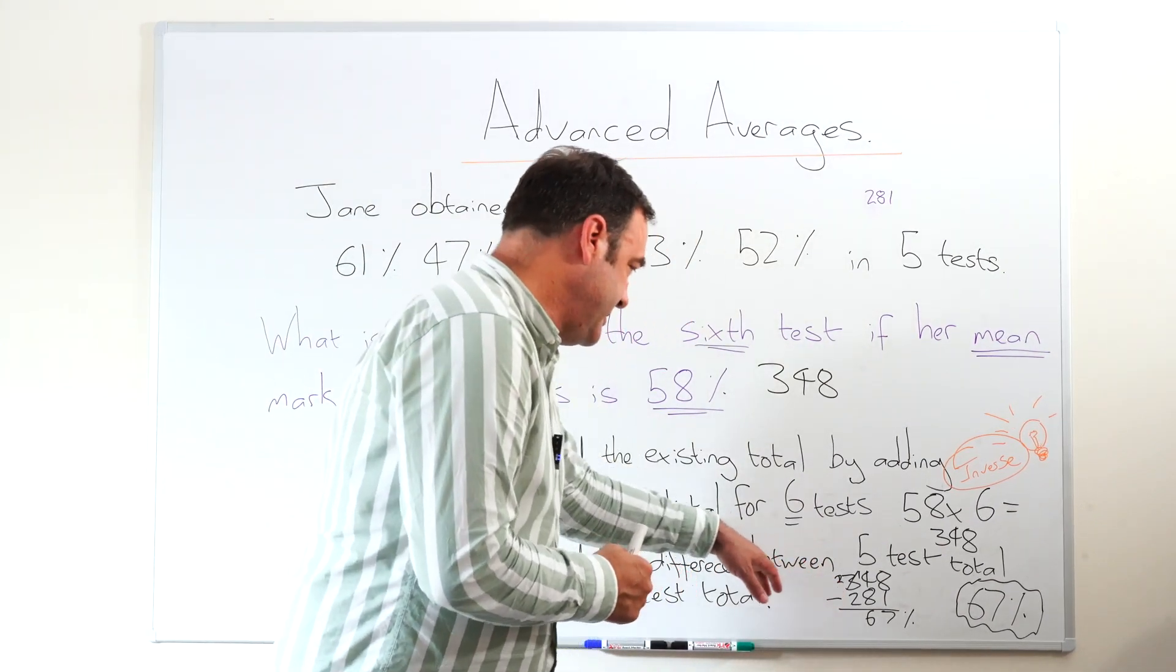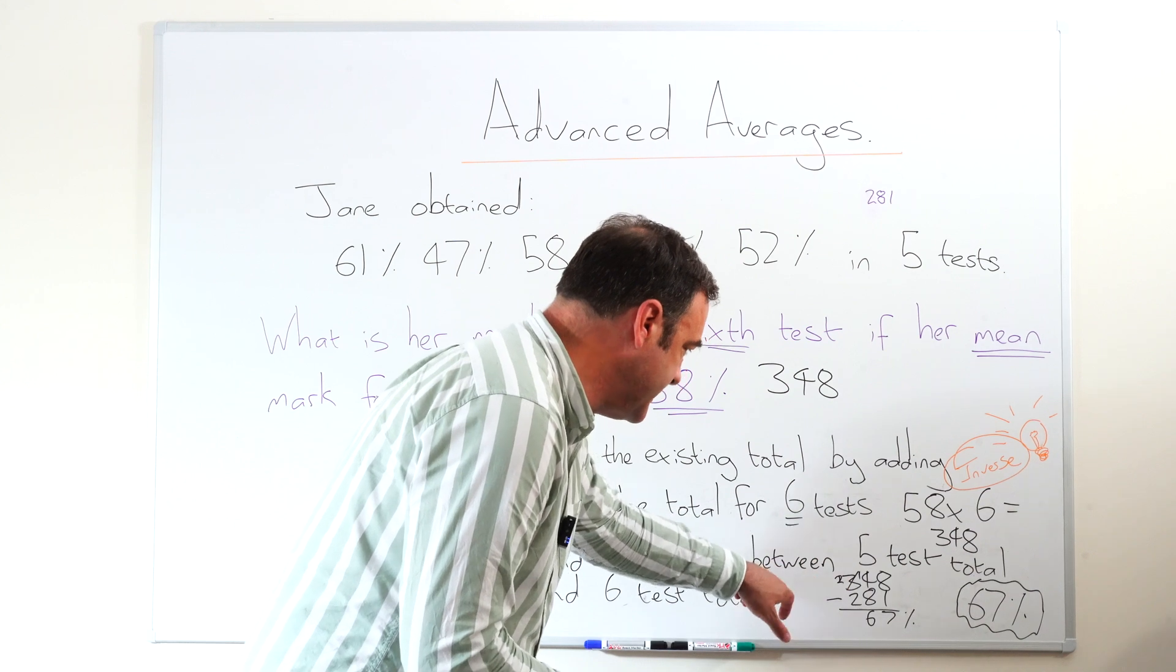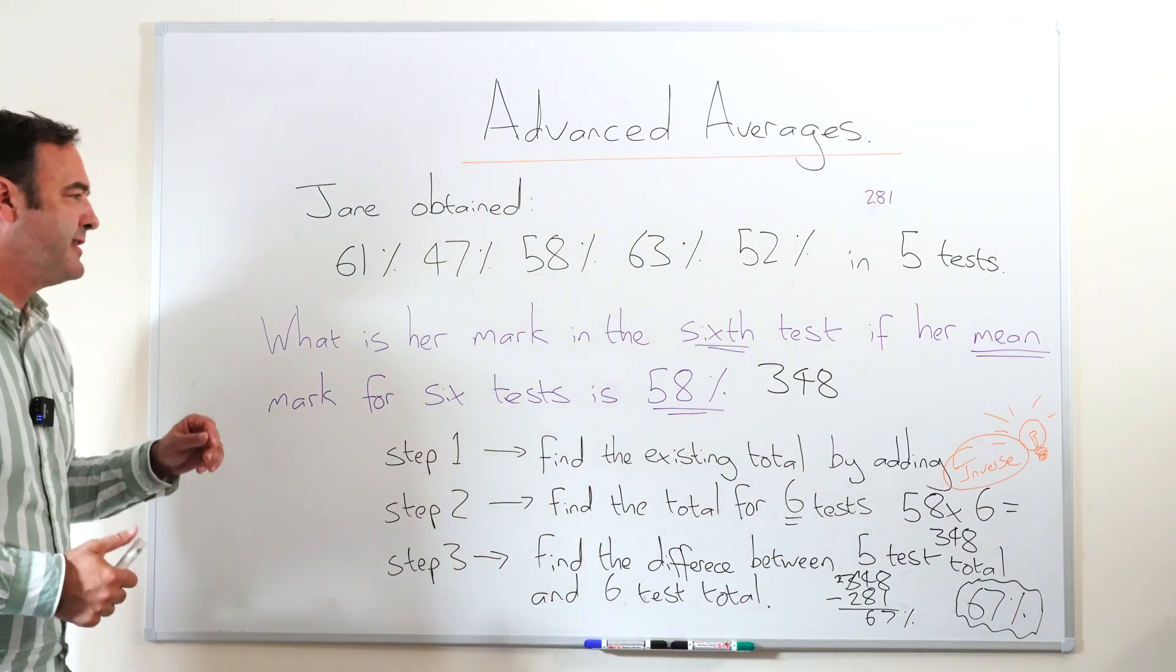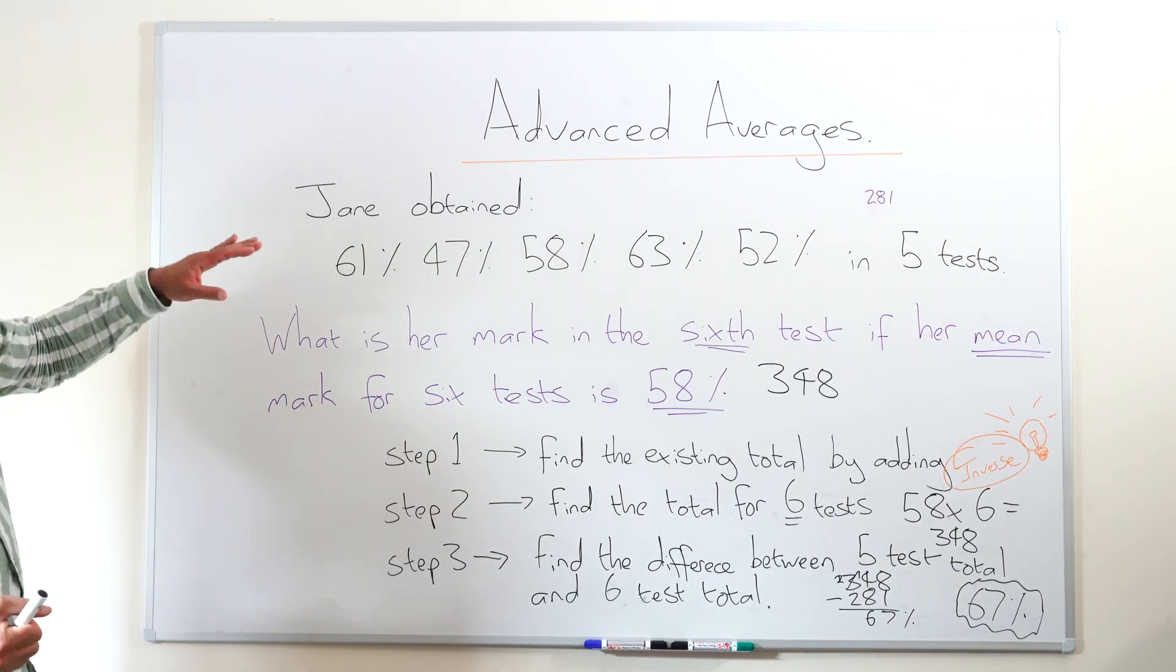So we just do 348 minus 281, we get 67%. So it's worth remembering that this is quite a common situation where the first part will be finding